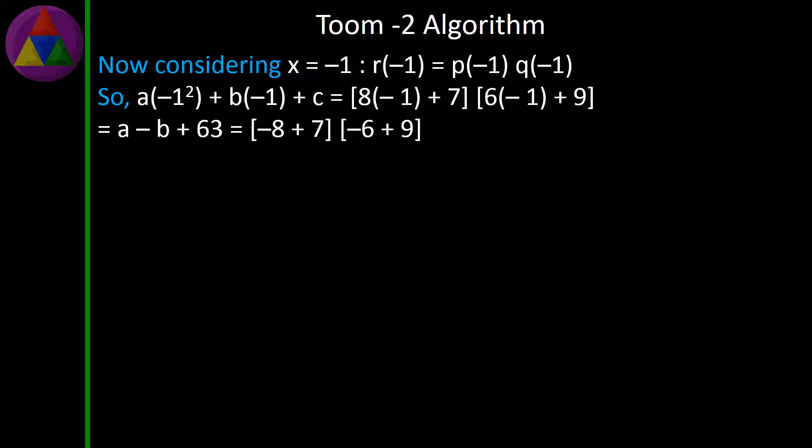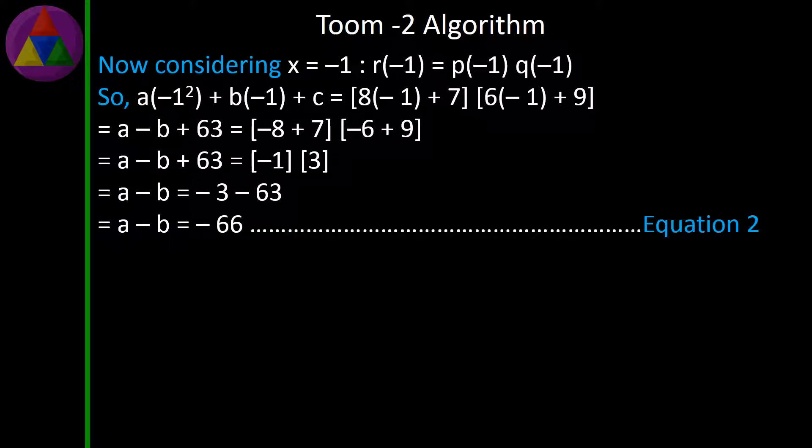Equal to a - b + 63 = (-1 + 7)(-1 + 9). Equal to a - b + 63 = (-1) × 3. Equal to a - b = -3 - 63. Equal to a - b = -66. Equation 2.